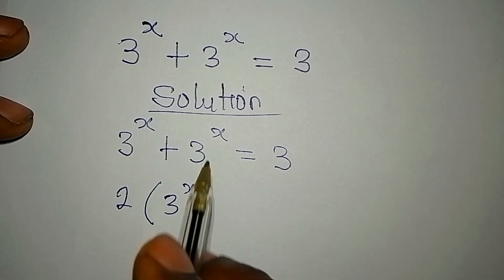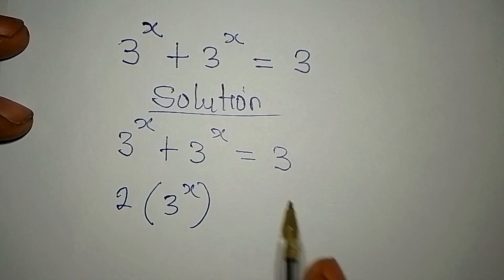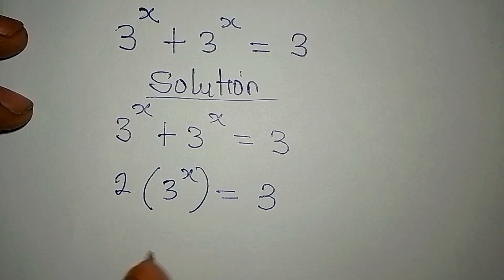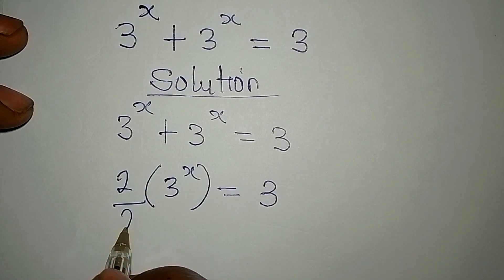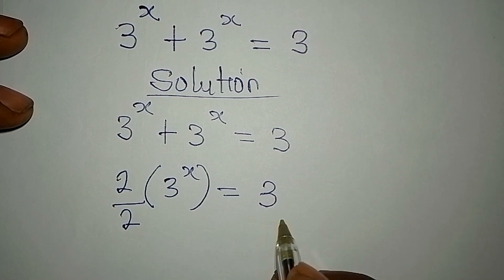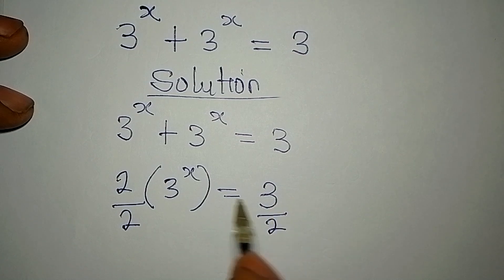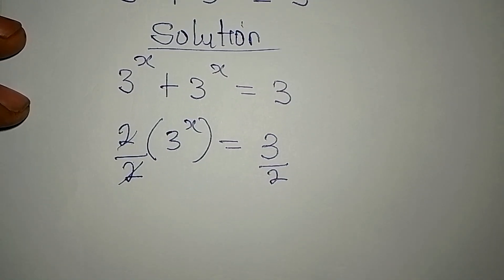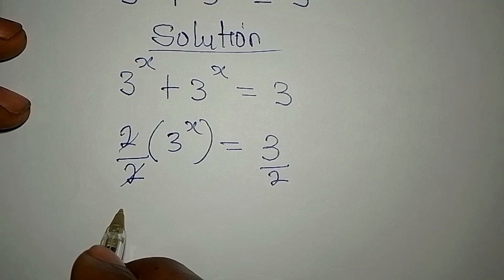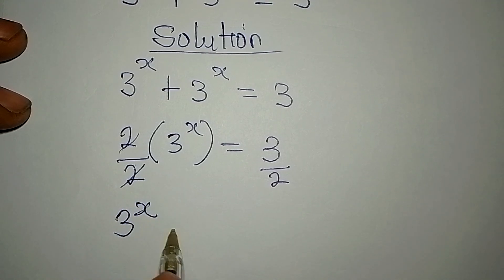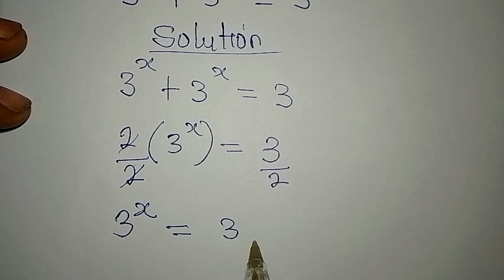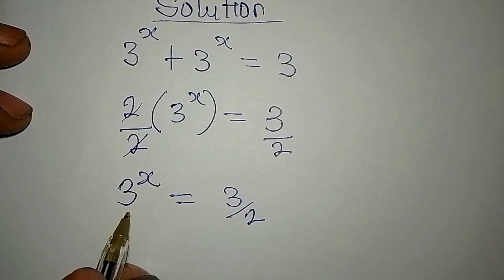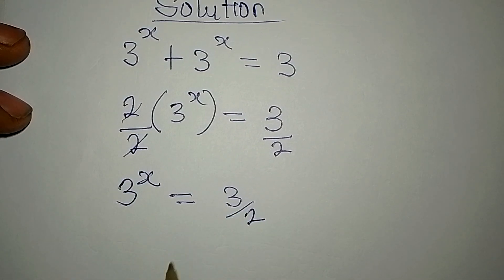We have 2 times 3 to the power of x, and it's equal to 3. Now let's divide both sides by 2 — this will cancel with this — and then we will say that 3 to the power of x is equal to 3 over 2.